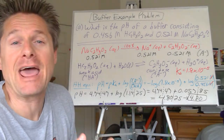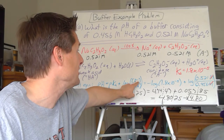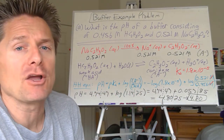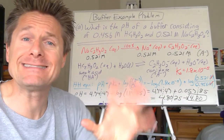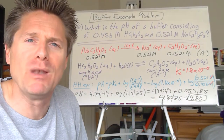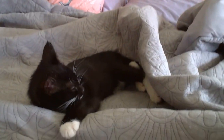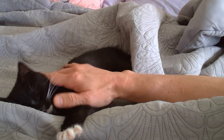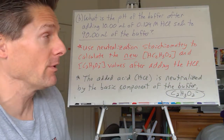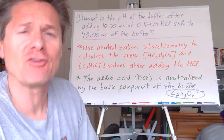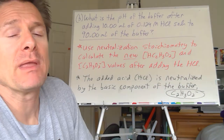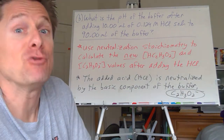When we add acid to this buffer, we do neutralization stoichiometry first to see how the concentrations of A⁻ and HA change, then calculate those new concentrations, then plug them back into the Henderson-Hasselbach equation. It's double the fun. We're just combining stoichiometry from first-semester general chemistry with the Henderson-Hasselbach equation. The order of operations is where people have trouble.